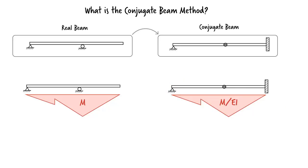According to the conjugate beam method, slope in the real beam is the same as shear in the conjugate beam, and deflection in the real beam is equal to moment in the conjugate beam.